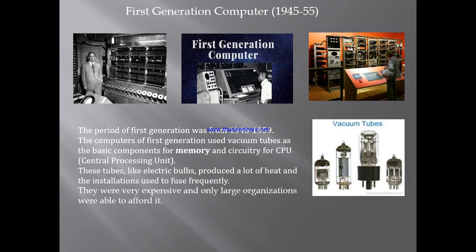सबसे पहले समझते हैं कि first generation क्या है। First generation में vacuum tubes use होती थीं। The period of the first generation was from 1946 to 1959. The computers of the first generation used vacuum tubes as the basic components for memory and circuitry for the CPU. The tubes, like electric bulbs, produced a lot of heat and the installation used to fuse frequently. They were very expensive and only large organizations could afford them.